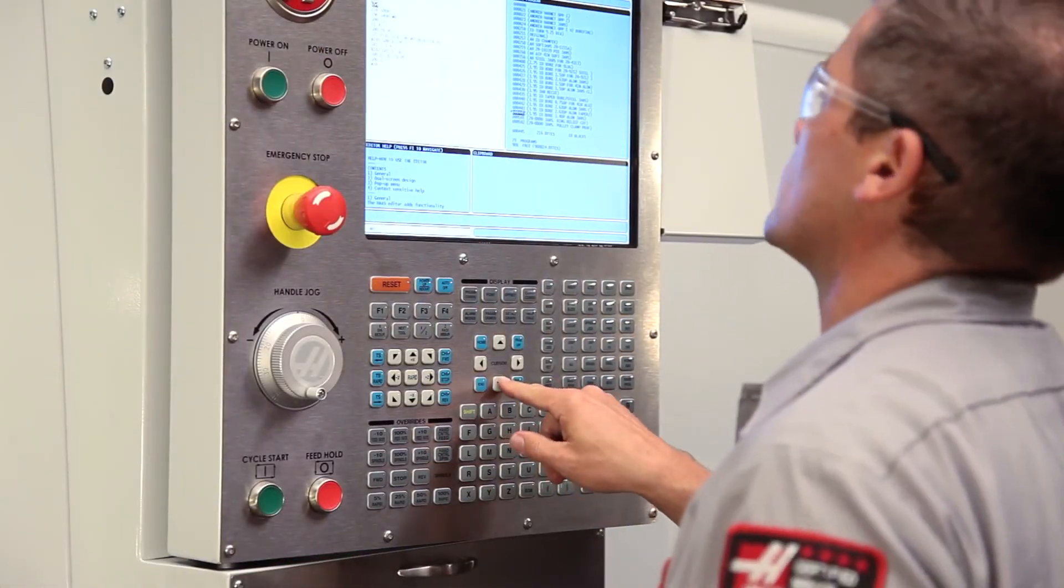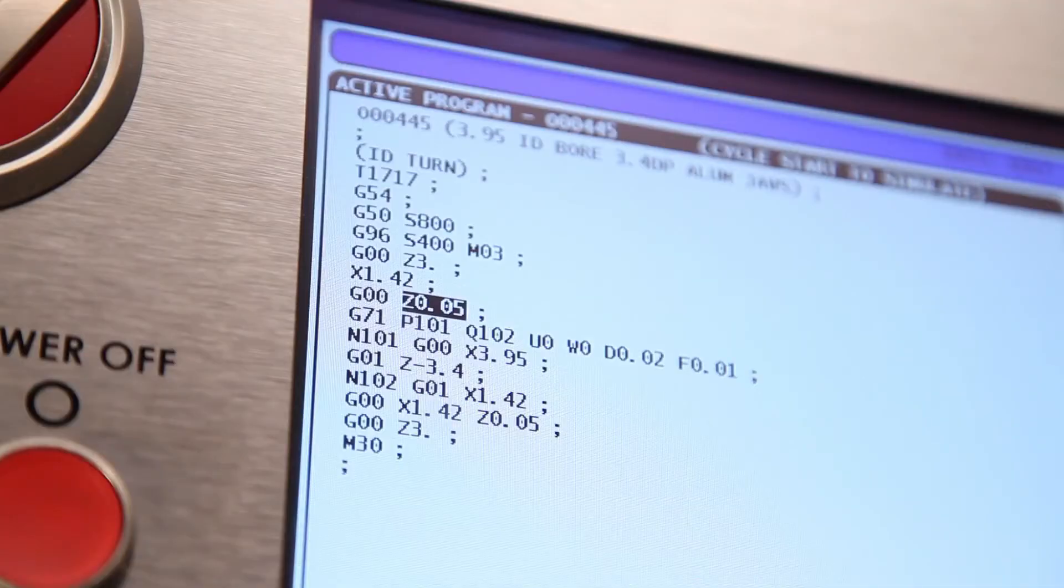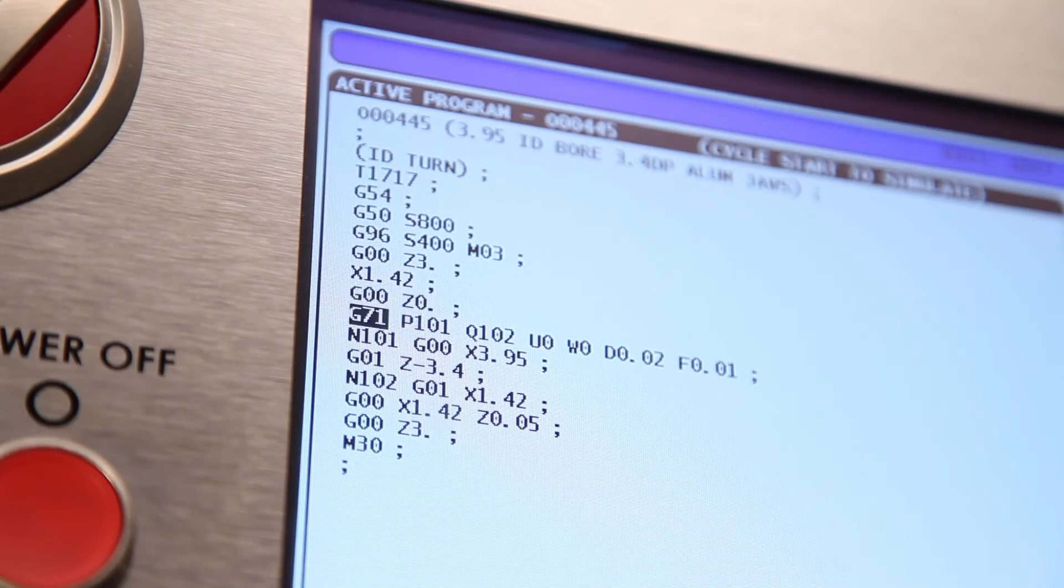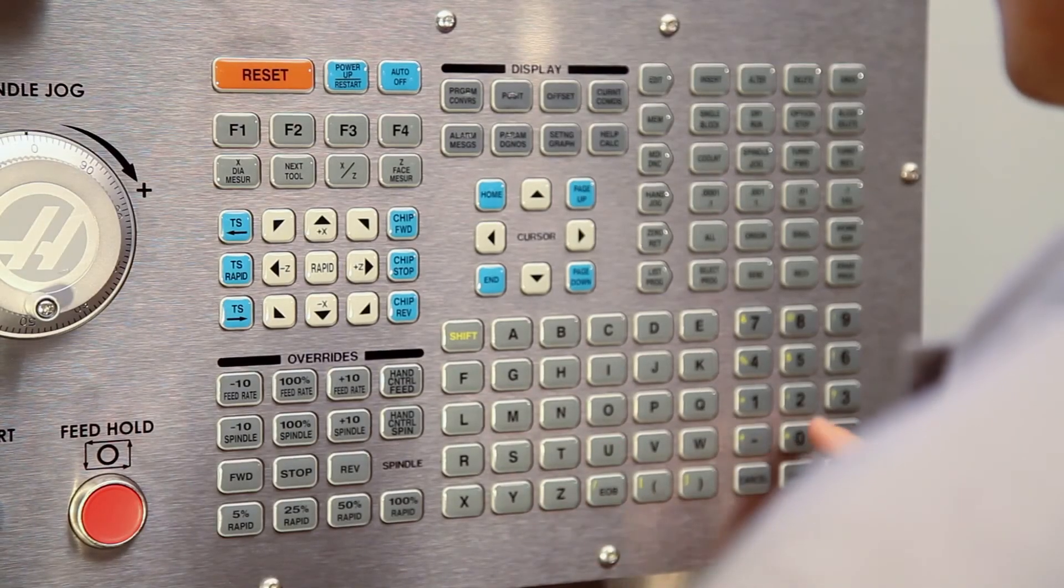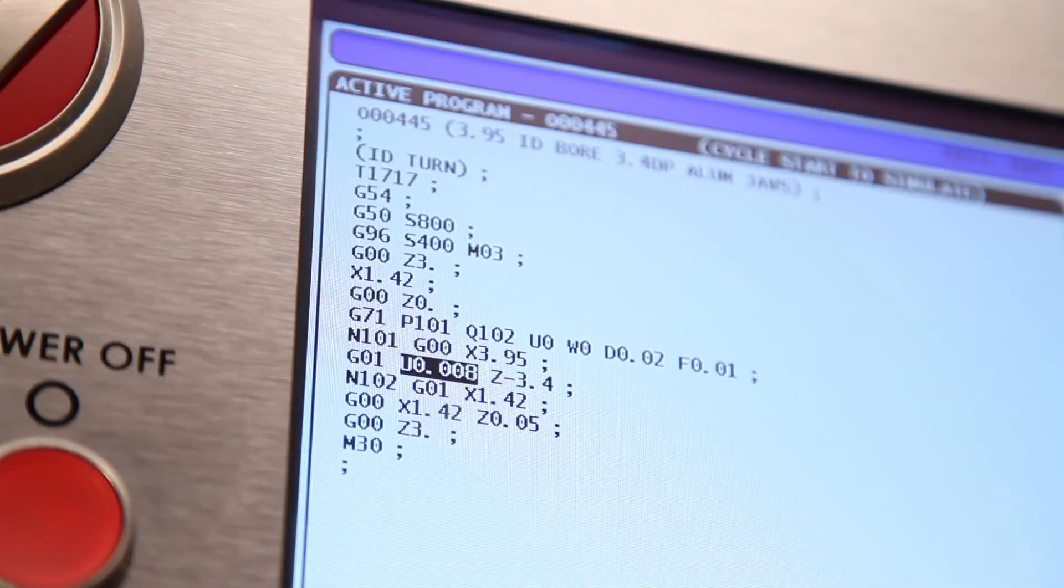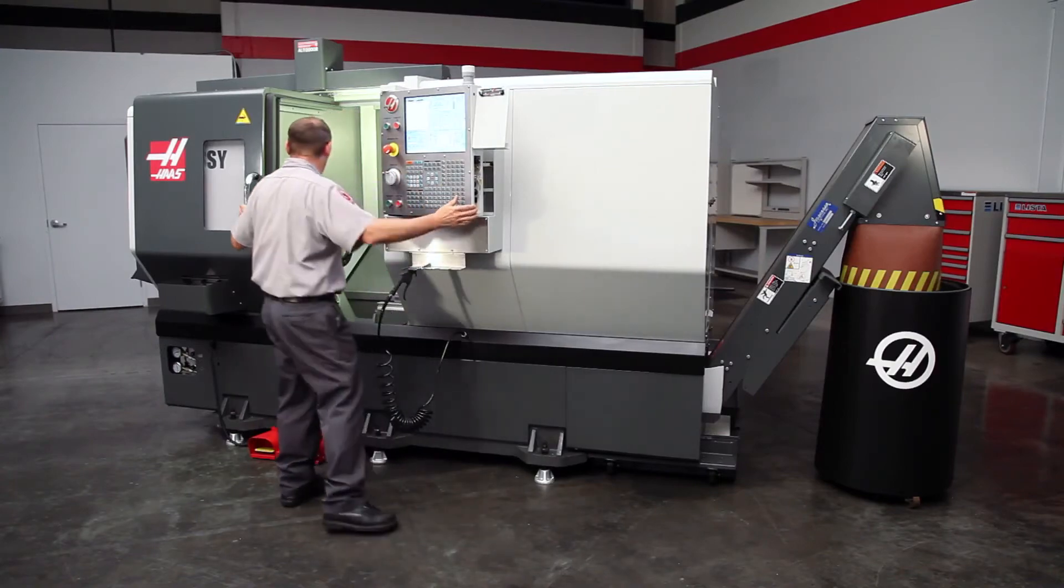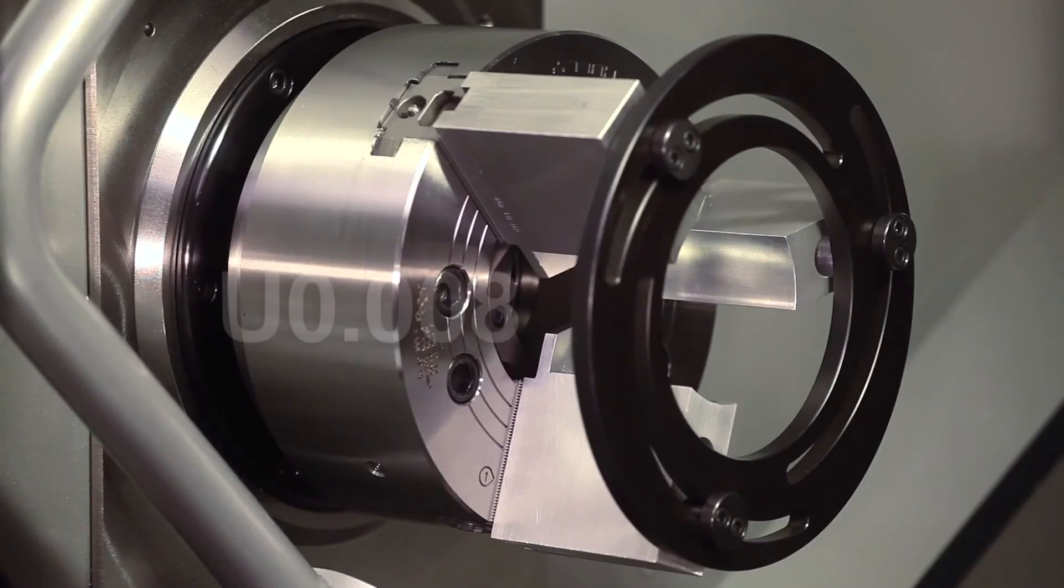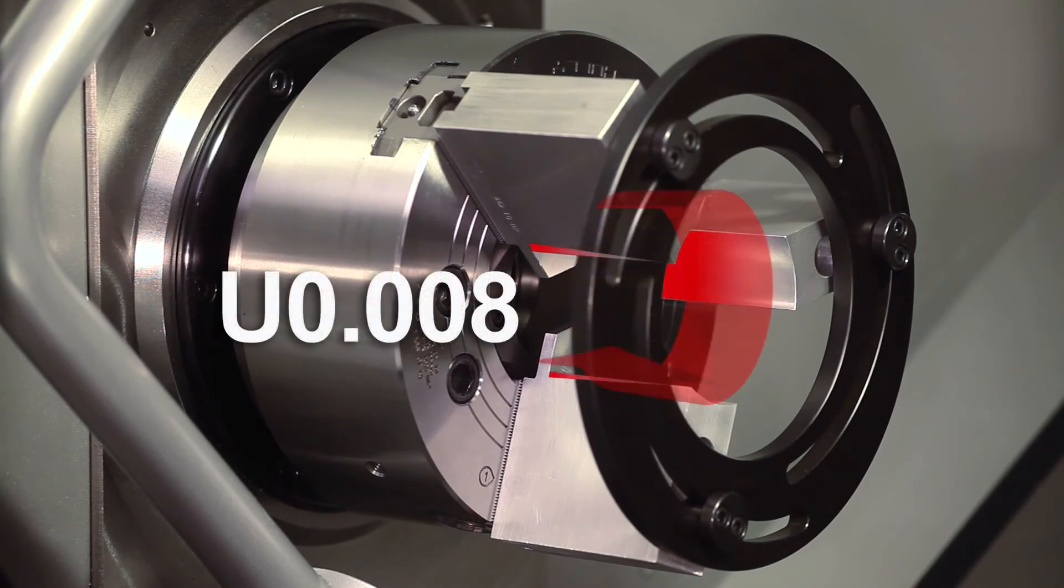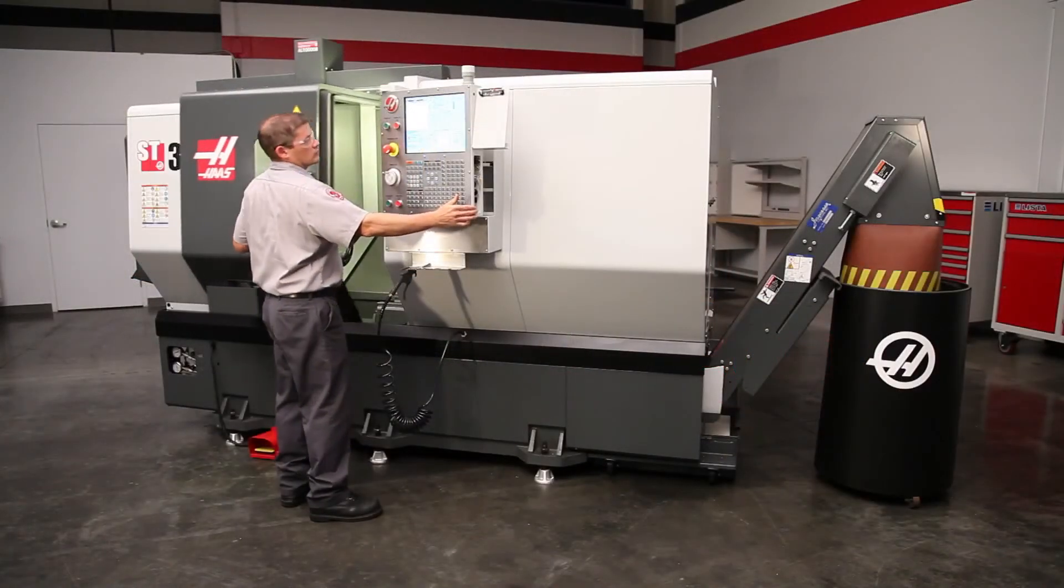Going back to his original program, Andrew changes the starting point of the cut from Z0.05 to Z0 to start right at the face of the part. He inserts U0.008 in front of the Z-depth move. This will taper the face so the bore is larger diameter at the bottom than at the top. Since U0.008 is a diametrical adjustment, it will taper each wall 4,000ths of an inch. Andrew cuts the taper in the jaws.